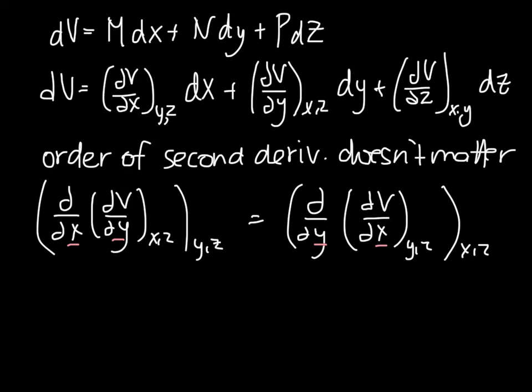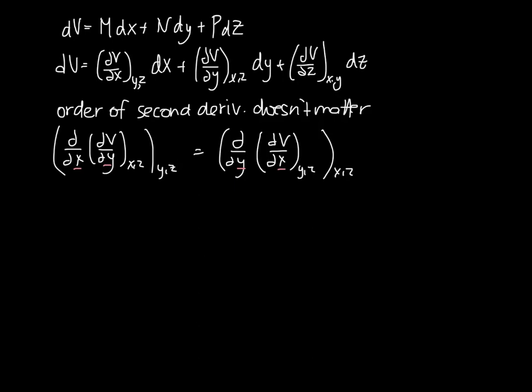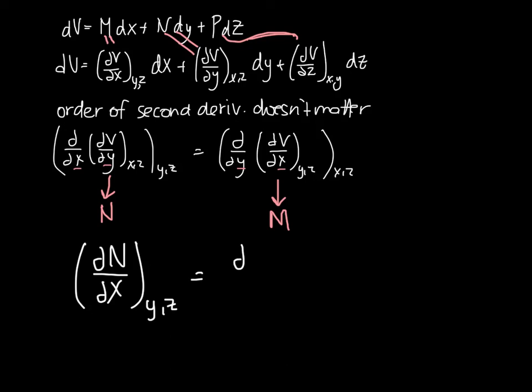And I can then get some interesting relationships because if you notice from the coefficient relationships, so M is equal to this down here and N is equal to this and P is equal to this. So dV dy here is N and dV dx is M, and so then in fact I can rewrite this just to say dN dx with constant y and z is equal to dM dy with a constant x and z.